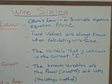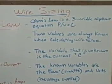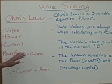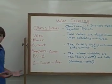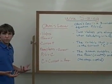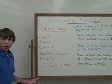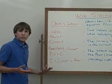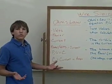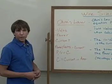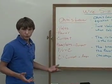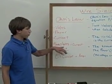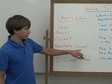Two values are always known when calculating wire size. You're always going to know the power of what the appliance takes up in watts and the volts supplied. So let's say you're talking about a range that might take up 500 watts of power and it's a 240-volt circuit — you would take the power divided by the volts and it's going to give you your current.